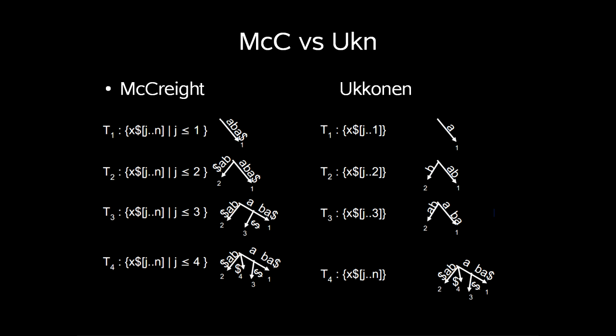but t3 they differ, where Ukkonen makes no node for x[3..3] equals to the letter a. But in the end we have the same suffix-tree constructed.